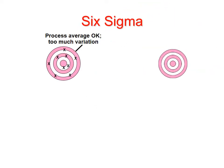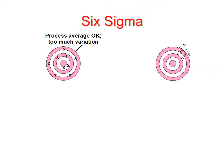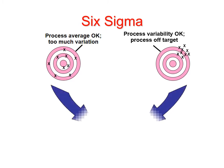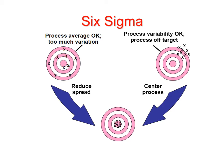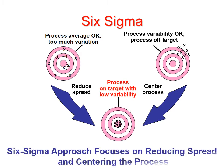Six Sigma. Process average occurs with too much variation. This shape represents process variability, but the process is off-target. Six Sigma aims to center the process and reduce spread, resulting in a process on target with low variability. The Six Sigma approach focuses on reducing spread and centering the process.